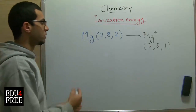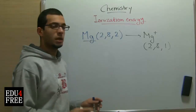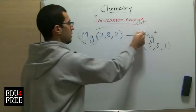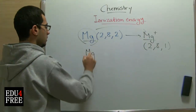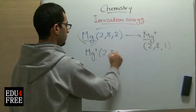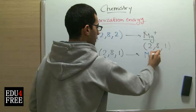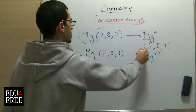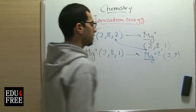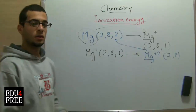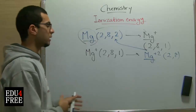Because it is also possible to lose 2 electrons or 3 electrons, there is a first ionization energy, which is the amount of energy needed to convert the atom into a positive ion. There is also a second ionization energy, which converts Mg+ (with electronic configuration 2, 8, 1) to Mg²⁺. Mg²⁺ means it lost 2 electrons, so its electronic configuration is 2, 8. The third ionization energy is the amount of energy needed to let the atom lose 3 electrons, and so on.